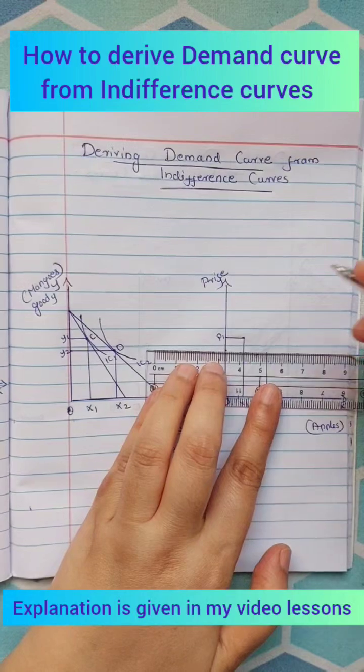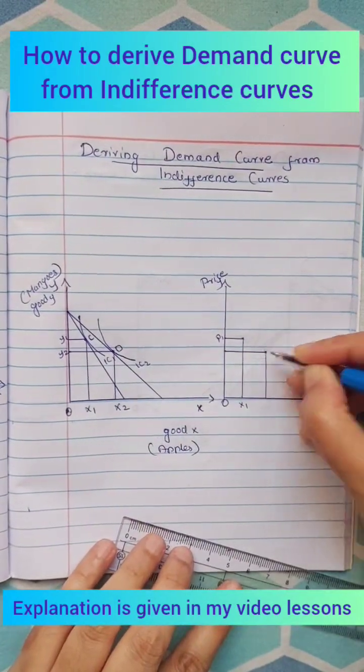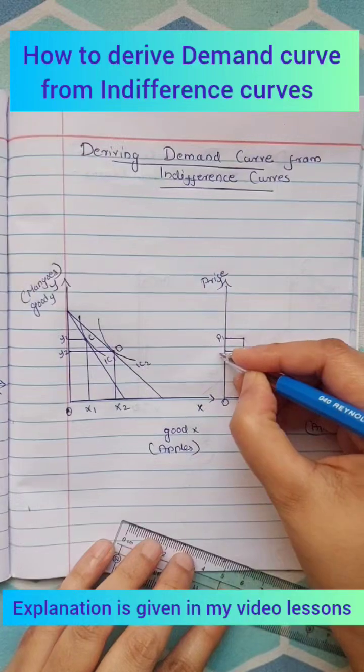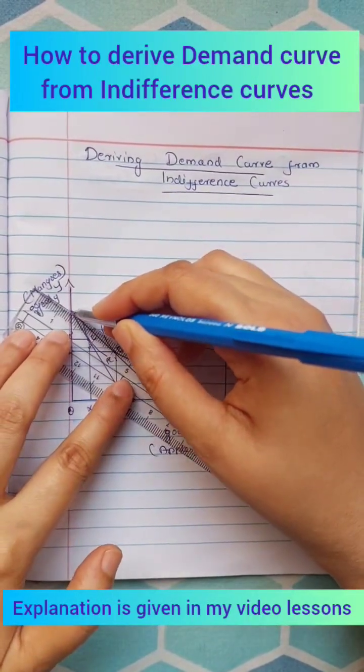We plot P2 and x2 in figure 2 to get the second point on the demand curve. When the price of apples again decreases,